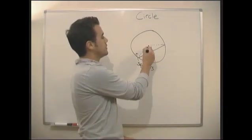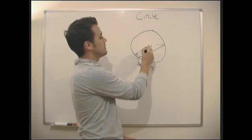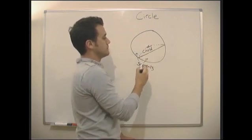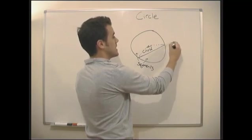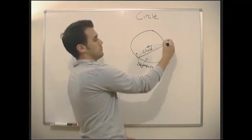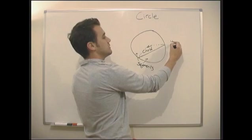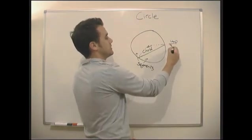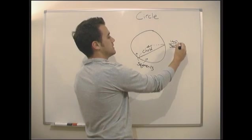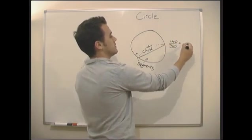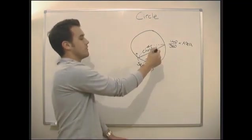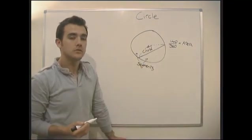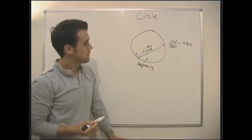So what we need to do, we need to work out the area of the sector. So we know the size of this angle. In this case, let's say it's 140 degrees. So we do 140 divided by 360 times by the area. So we work out the area of this whole sector.